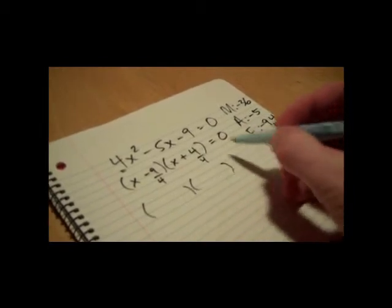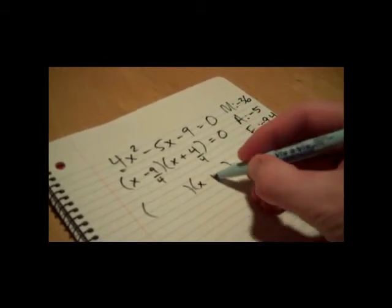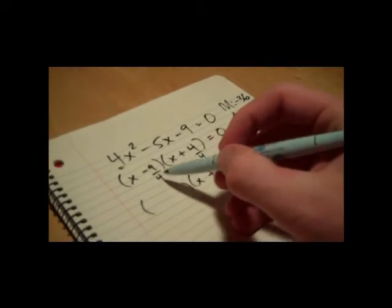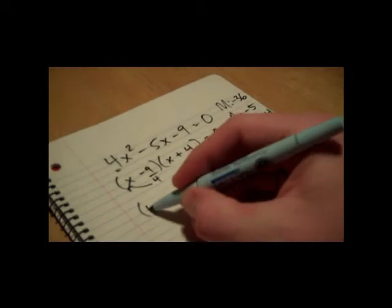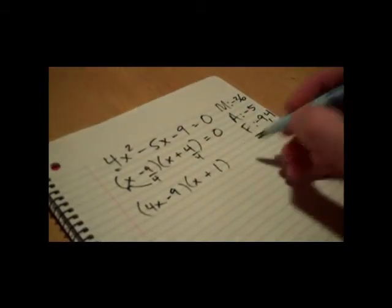If you want to completely factor it, you reduce this one. 4 over 4 is 1. This cannot be reduced. So what you do, a lot of times teachers will tell you to pull that out front, so it's 4x minus 9. It's still equal to 0.